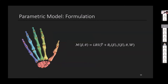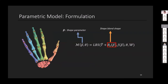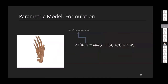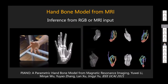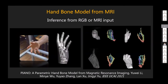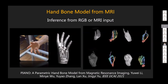This is our pose estimator. Just using a single RGB or multiple RGB images, we can infer very accurate bone position and structures. This was published at ICCV 2021. Our next step is to integrate with muscle structures.